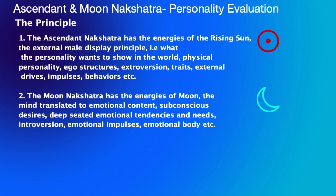Rule number one: the ascendant nakshatra has the energies of the rising sun, your rising sign also. It is the external male principle — what you display in the world, what the personality wants to show in the world: the physical personality, the ego structures, extroversion, traits displayed externally, external drives, external impulses, external behaviors, etc. The sun is all about shining forward; it brings forth anything that we shine in the world. It is an external male principle — the first one we should see: the ascendant nakshatra.